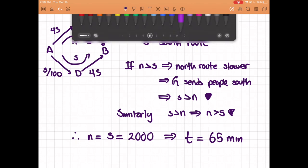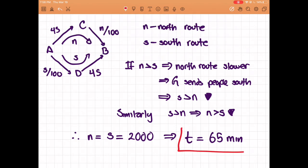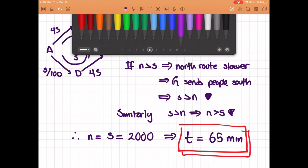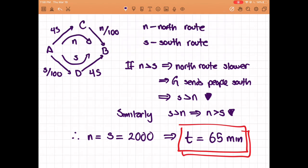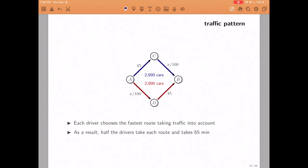Alright, so that is our status quo. That is how traffic would look without the bridge. It would take 1 hour 5 minutes for each member of society to go from A to B. So let us summarize that again. If everybody chooses the fastest route taking traffic into account, then it has to be the case that half the cars are going north, half the cars are going south, and as a result, everybody takes 65 minutes to get to their destination.